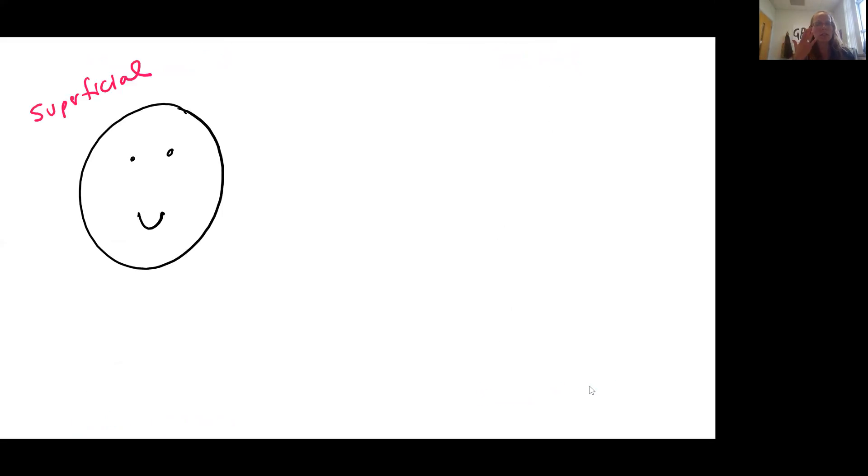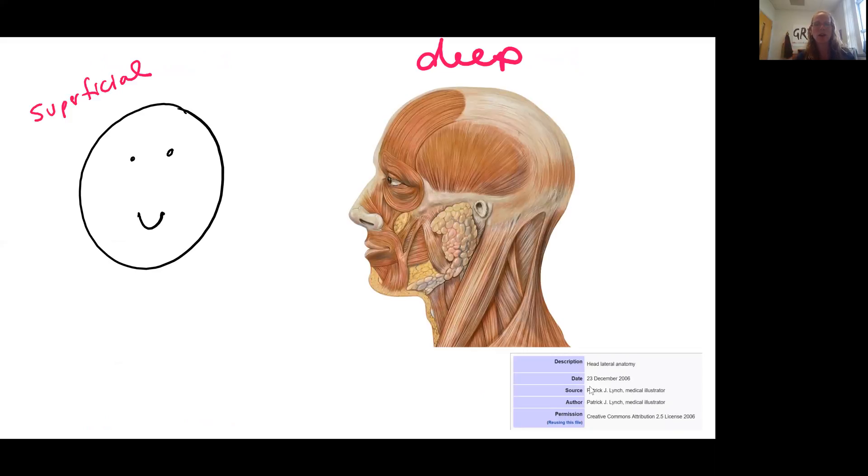Superficial means the surface, and then here would be an example of something that is deep. So the skin is superficial. If you peel off the skin and the layer of fat, the subcutaneous layer underneath, then you get to the muscles which are deep. I also like to think about this in terms of donuts. If you eat a jelly donut, the powdered sugar on the outside would be superficial and the jelly in the middle would be deep.